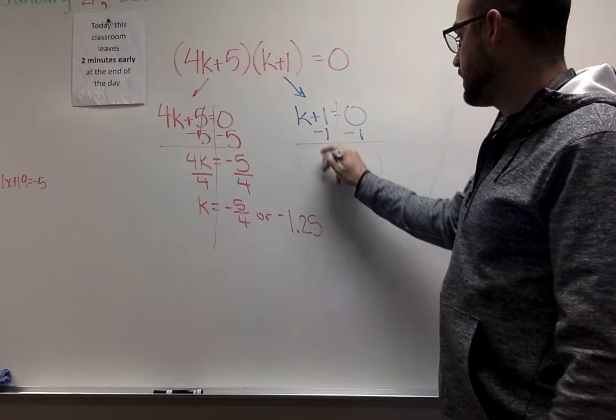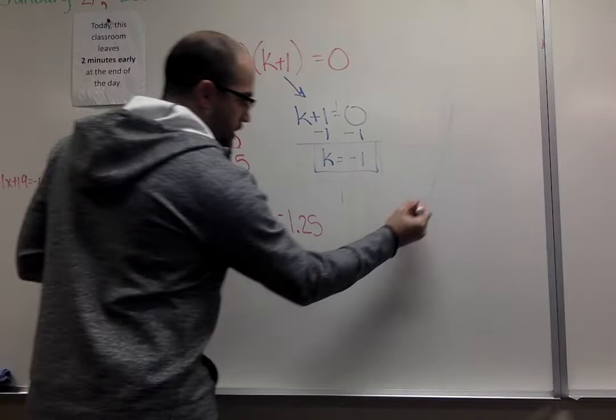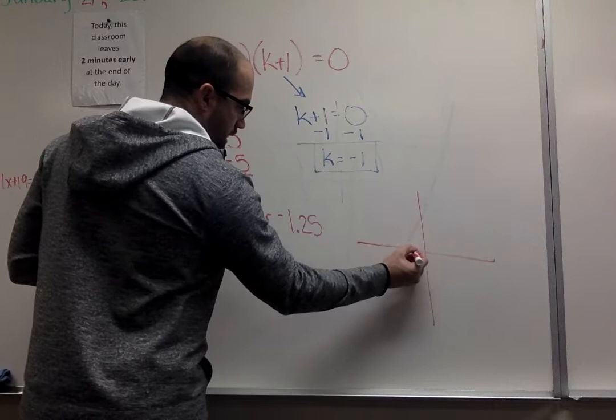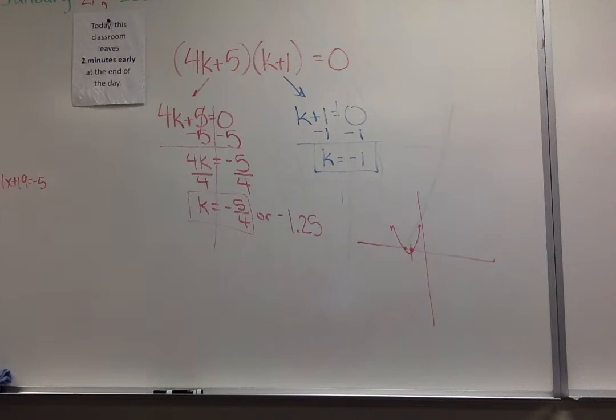So I have my two solutions right here. We discussed yesterday what that would look like on a graph. It's these zeros. It's where it hits the x-axis. So if it hits at negative 1, I know there's a dot here. It hits at negative 1.25, so it hits right here. It's probably a graph that's really close to turning right in that area.